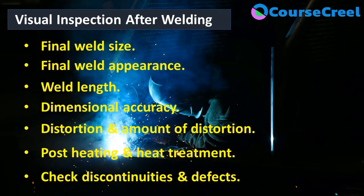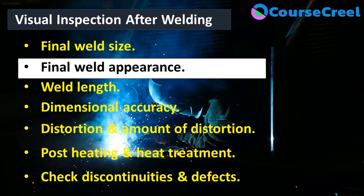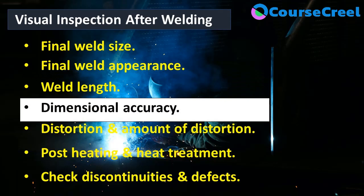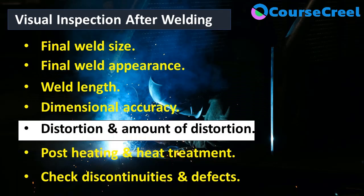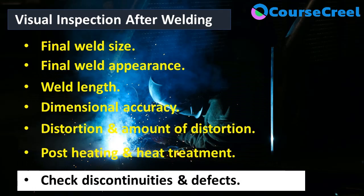For visual inspection after welding, the following points should be taken care of: first, check the final weld size; next, check the weld appearance; then check the weld length. We need to check dimensional accuracy, and check for distortions and the amount of distortion if it is occurring. Check whether any post-heating or heat treatment processes are required after welding. Finally, check for discontinuities or defects like porosity, undercut, slag inclusion, overlap, etc.